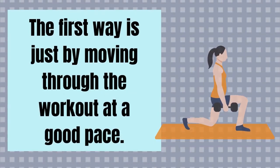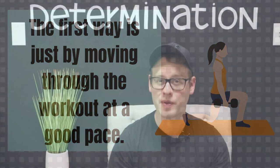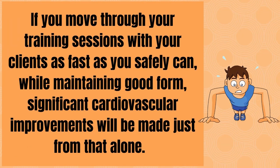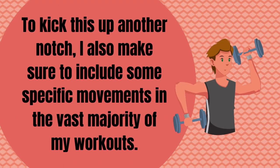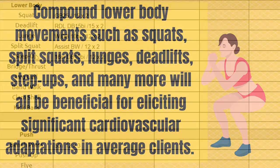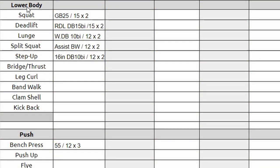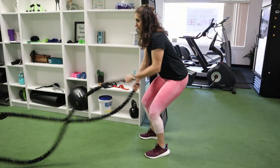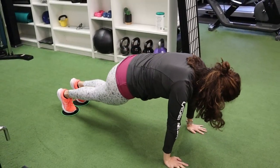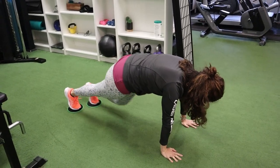There are two ways cardio should be included within your training sessions. The first is simply by moving through the workout at a good pace — how fast depends on your client's capability, but moving as fast as you safely can while maintaining good form will produce significant cardiovascular improvements on its own. The second way is by including specific movements in the vast majority of your workouts. Compound lower body movements such as squats, split squats, lunges, deadlifts, and step-ups are all beneficial for eliciting significant cardiovascular adaptations in average clients. I also include movements like battle rope waves and slider mountain climbers alongside more traditional strength training movements to help with this.